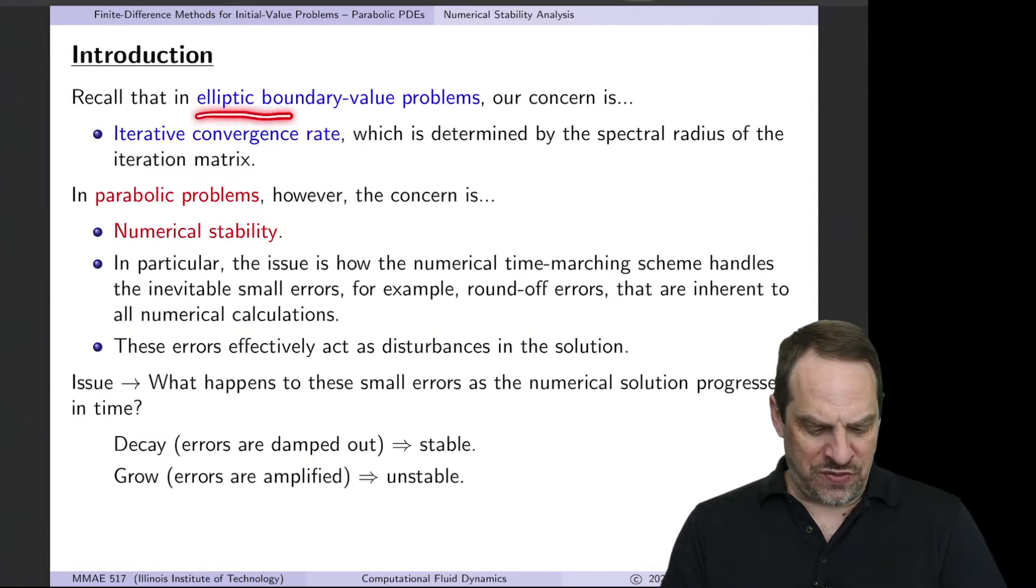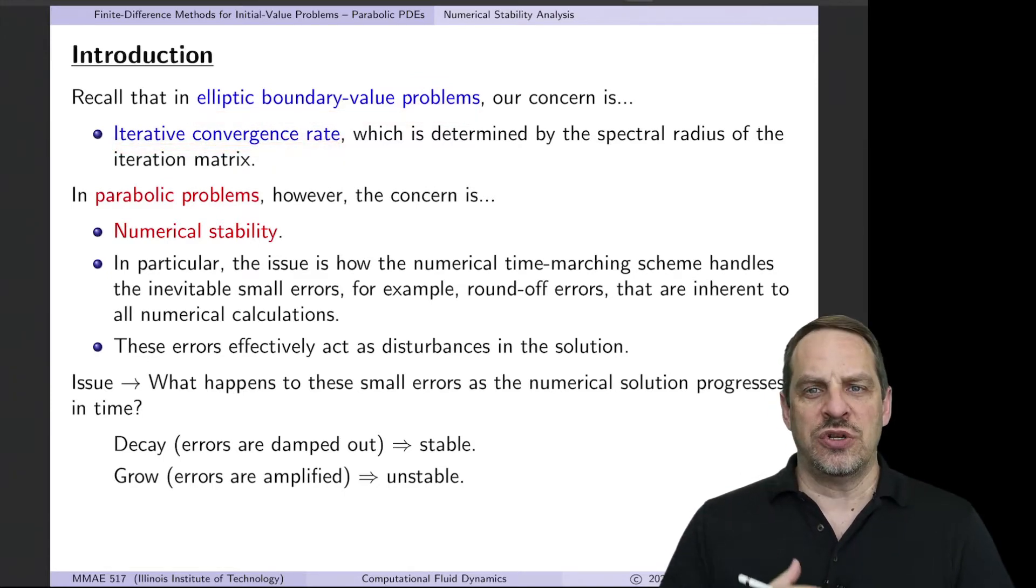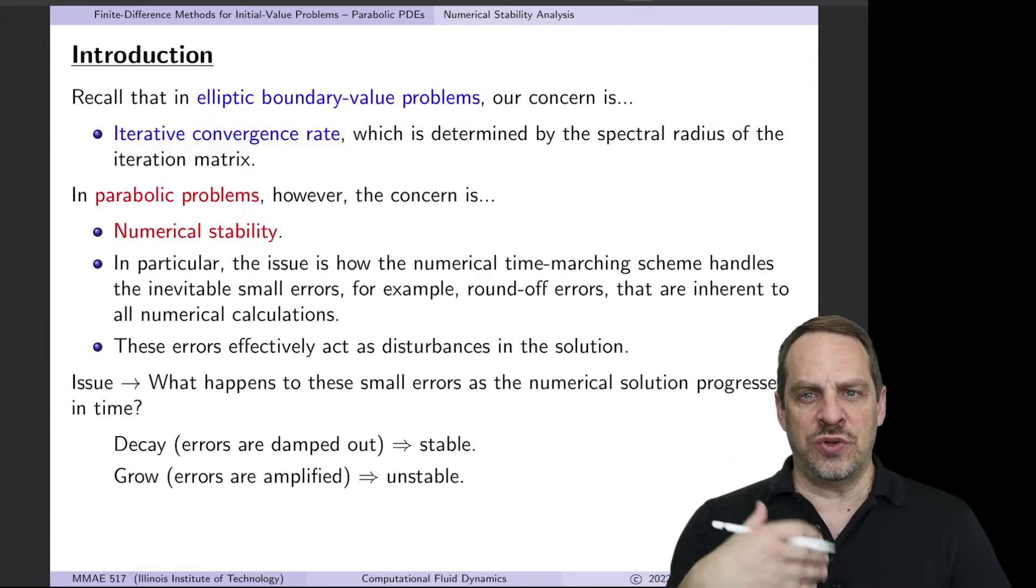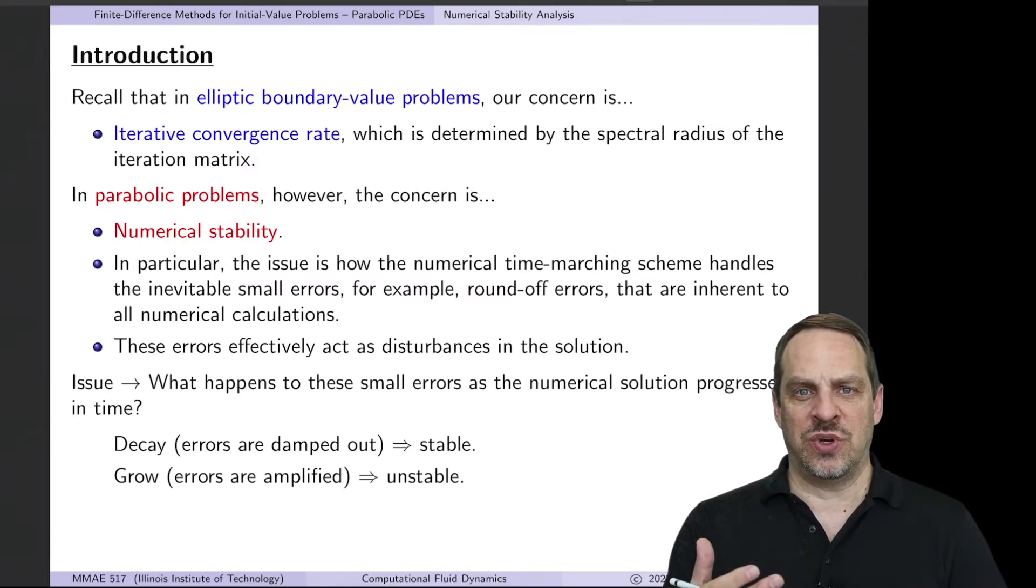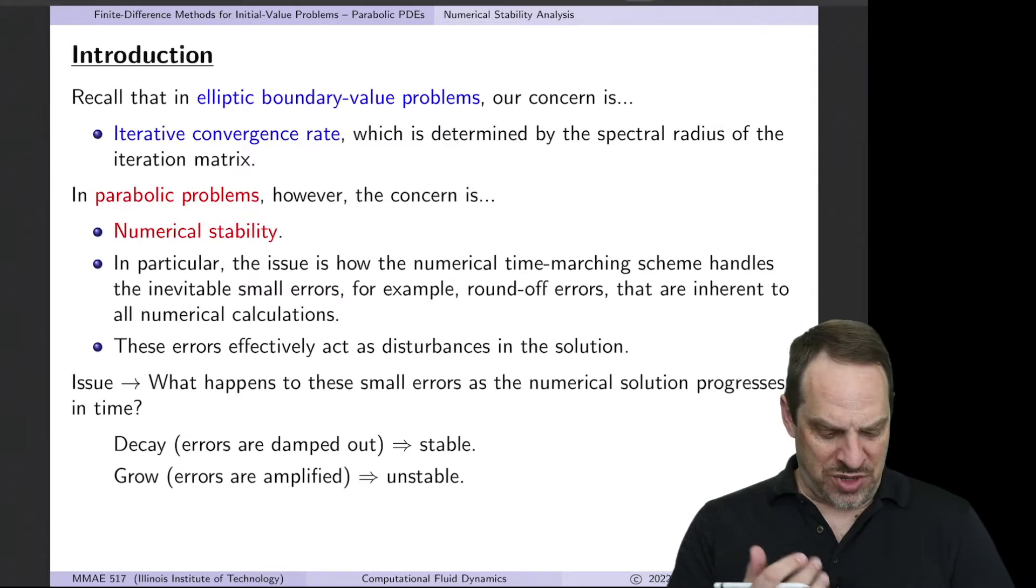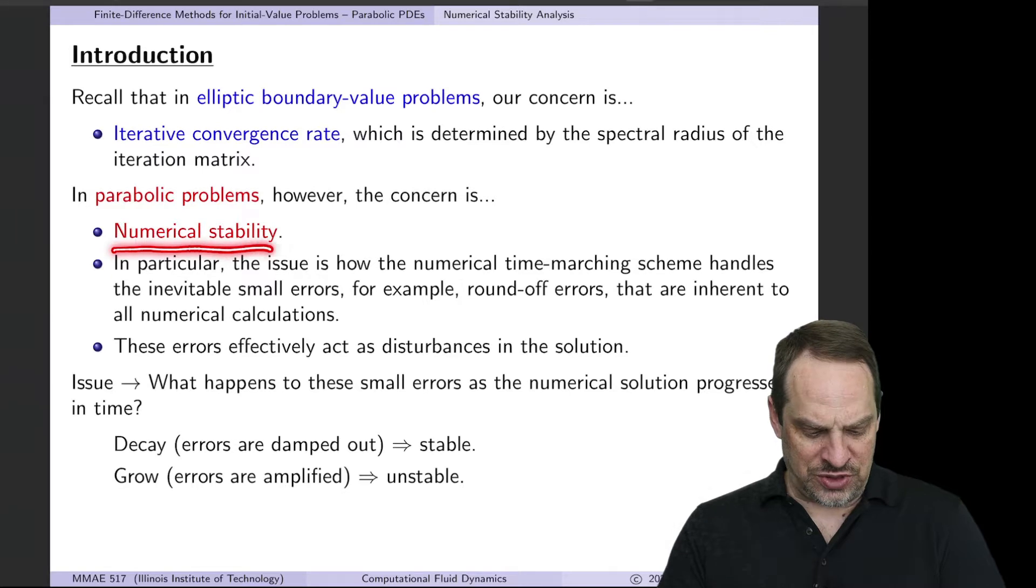You'll remember for elliptic boundary value problems, the issue is iterative convergence rate. We're doing an iterative process over and over again until that process converges. So we first want to know whether it's going to converge, and then of course how fast it's going to converge. In parabolic partial differential equations, or initial value problems, we have a different concern. The concern now is numerical stability.